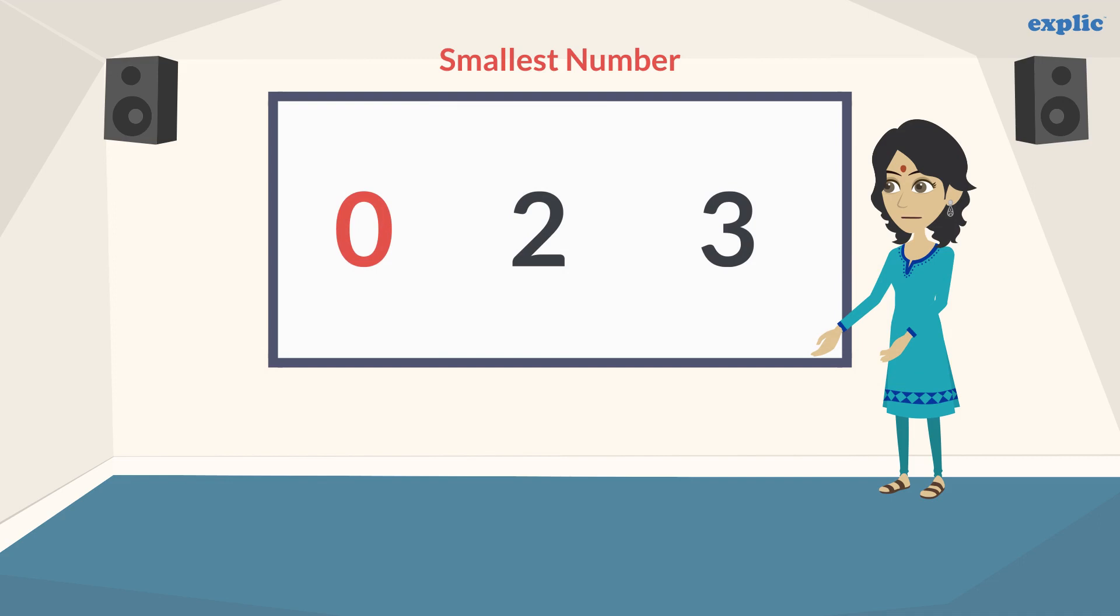Therefore, to form three digit smallest number, arrange numbers in ascending order, and swap the place of zero with the second digit. 203 is the smallest three digit number using digits 2, 0 and 3.